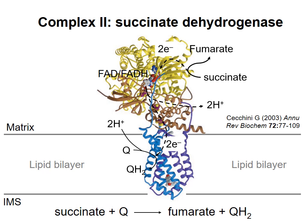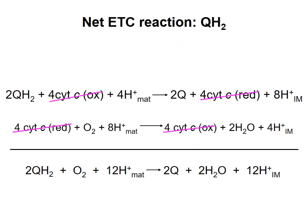The QH2 produced will give its electrons to complex III in the Q cycle, as described in a previous video. We can combine the net reactions of complex III and complex IV to get the net reaction for transfer of electrons from QH2 to oxygen. The oxidation of two QH2 molecules allows transport of 12 protons from the matrix to the intermembrane space, or oxidation of 1 QH2 allows movement of six protons. This is also a number I expect you to know for the exam.